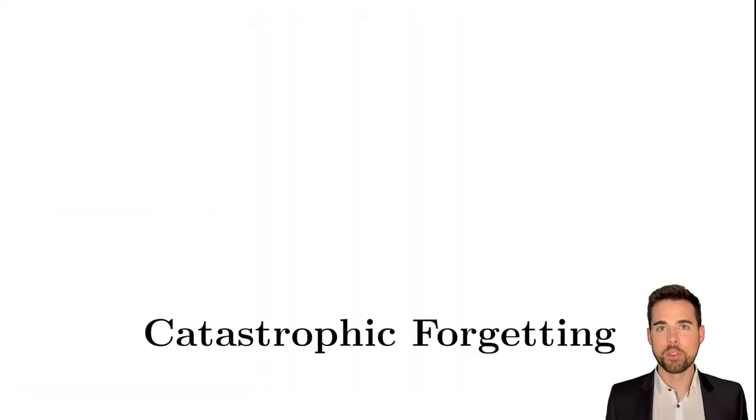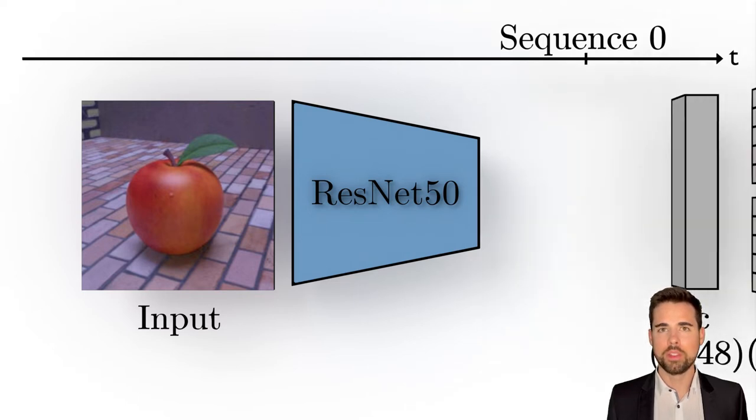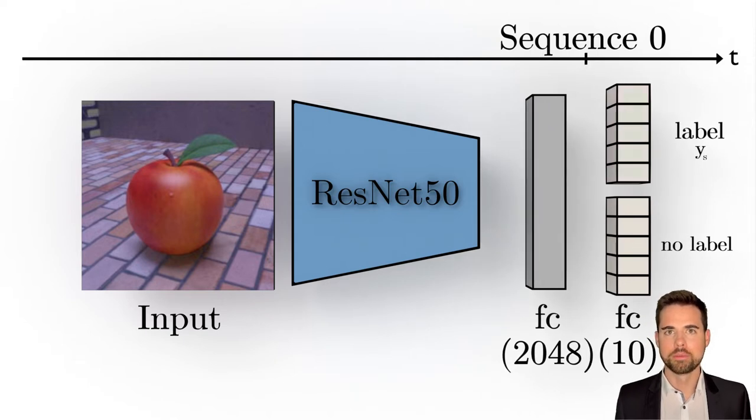The biggest problem we face here is catastrophic forgetting. Let's show this in an example, in which we try continual learning with a pre-trained ResNet-50, a fully connected layer and a classification layer. The first problem is that we have to know the number of categories the network can eventually learn, as the classification layer has 10 outputs.